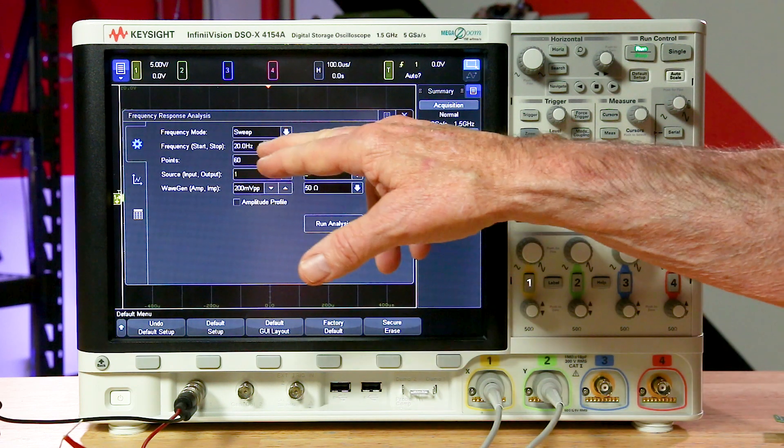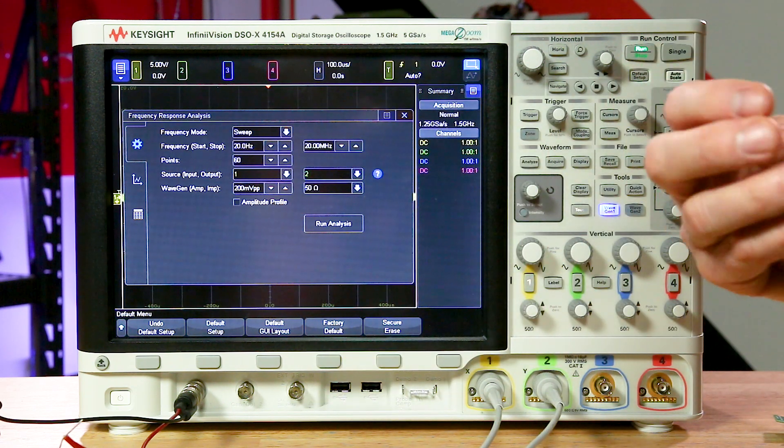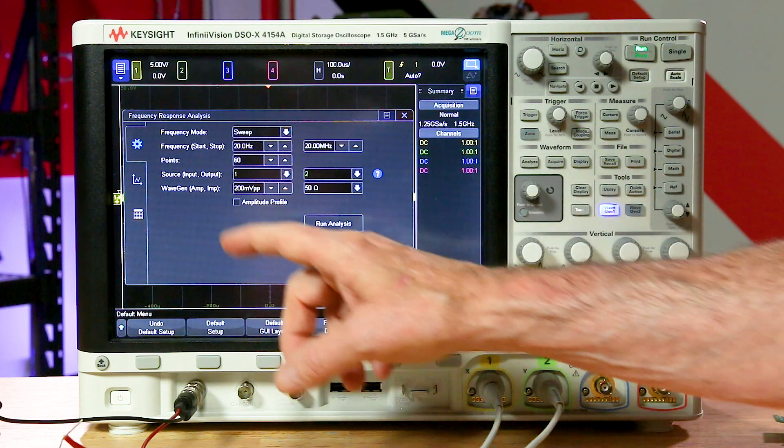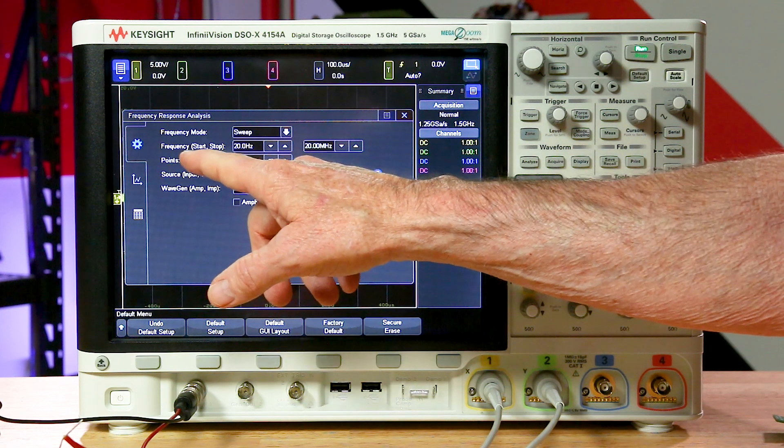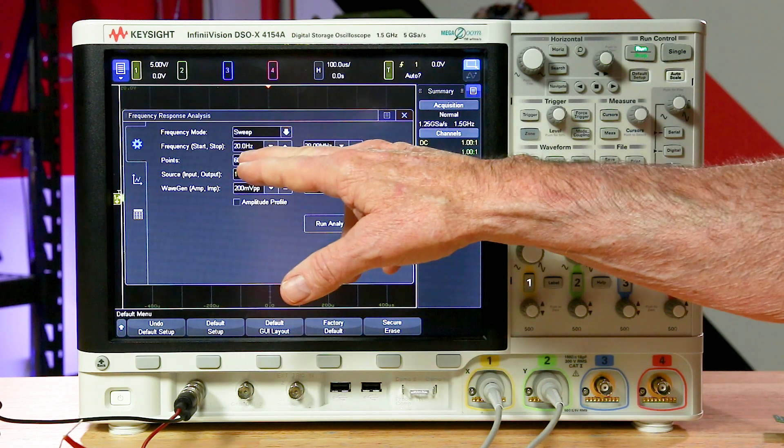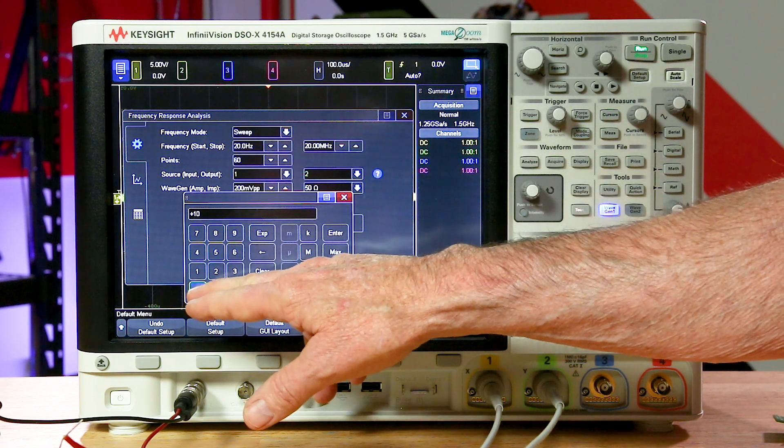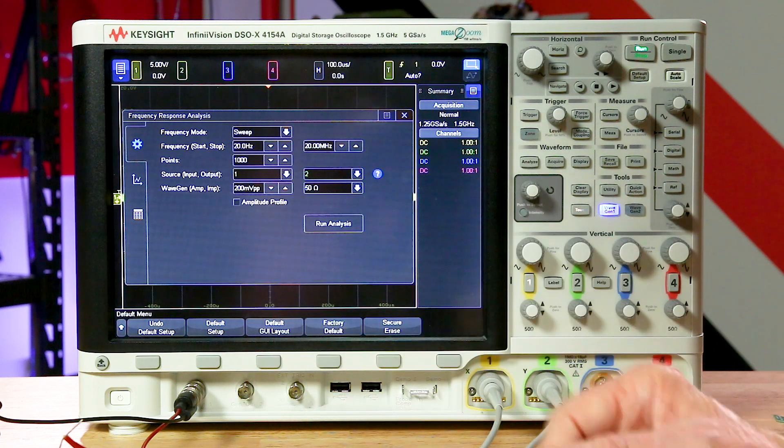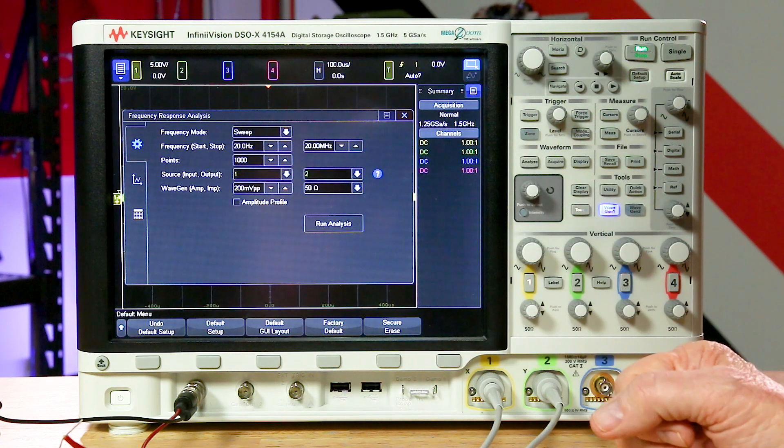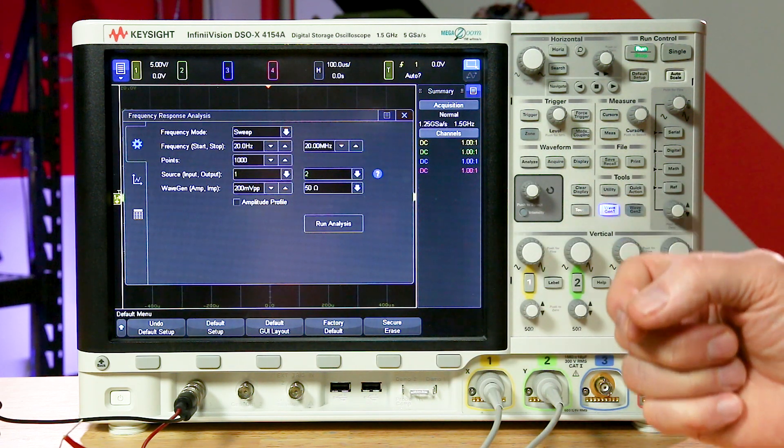Another thing was you told us you needed more points. You needed higher frequency resolution. We used to be able to set it points per decade up to 100 points per decade. We've changed it to total points all the way up to 1,000 points, and it can be across any frequency span. So you could run 1,000 points across a very narrow frequency span and get extremely high frequency resolution.